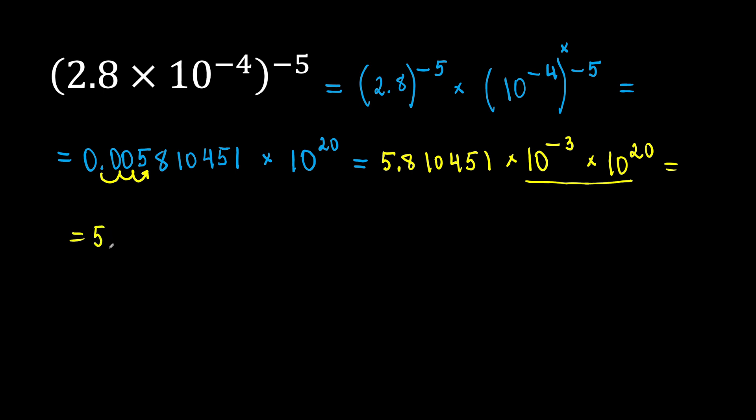We will have 5.810451 times. Here, we are multiplying with the same base. What will we do with the exponents? We will add them. When you multiply with the same base, keep the same base and add the exponents. Negative 3 plus 20 will give us positive 17.